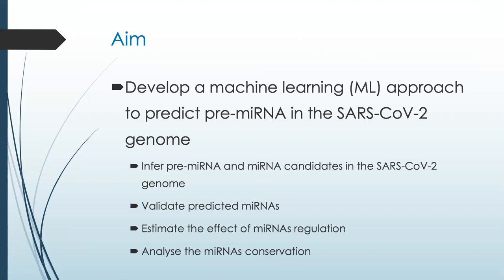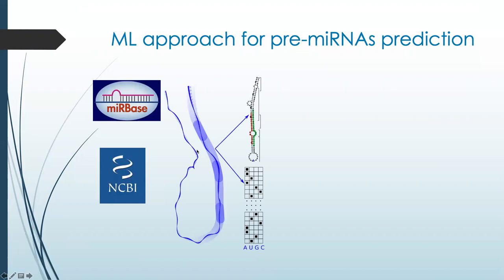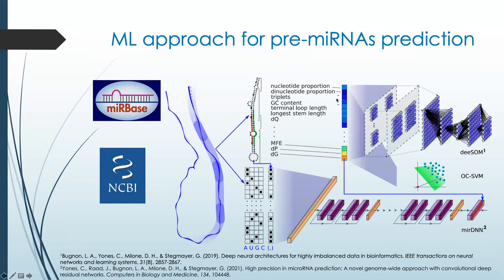To develop our machine learning approach, we used data from viral genomes with non-microRNAs downloaded from public databases such as MirBase and NCBI. Those genomes were cut into fragments of around 100 nucleotides that were then folded to predict secondary structures. Both the sequences and their secondary structures were pre-processed to obtain features useful for precursor microRNA predictions, such as the minimum free energy release when folding and the GC content.